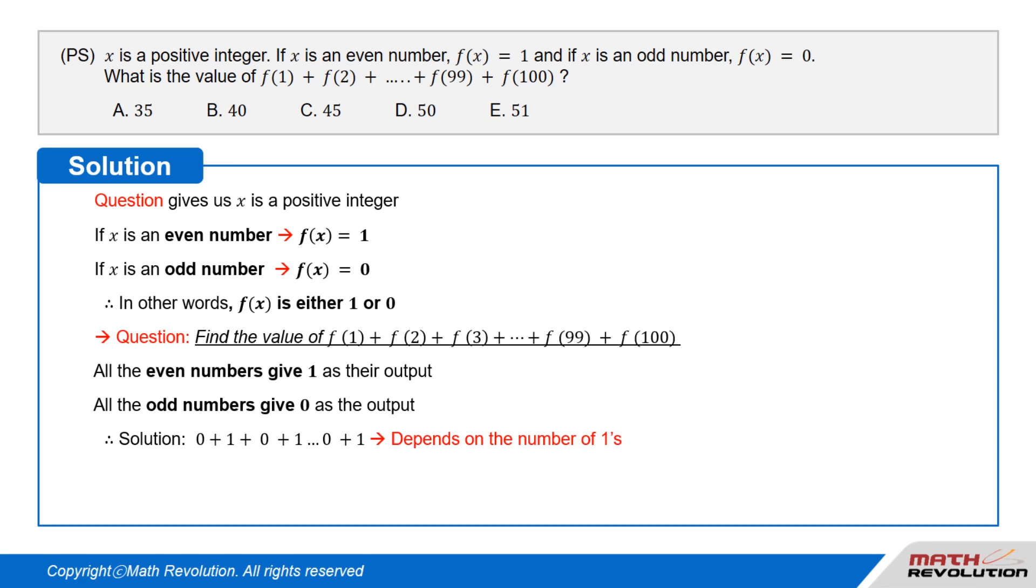And the total depends on the number of ones. There are 50 even numbers from 1 to 100. Therefore, there are 50 ones in the sum and the answer is 50.